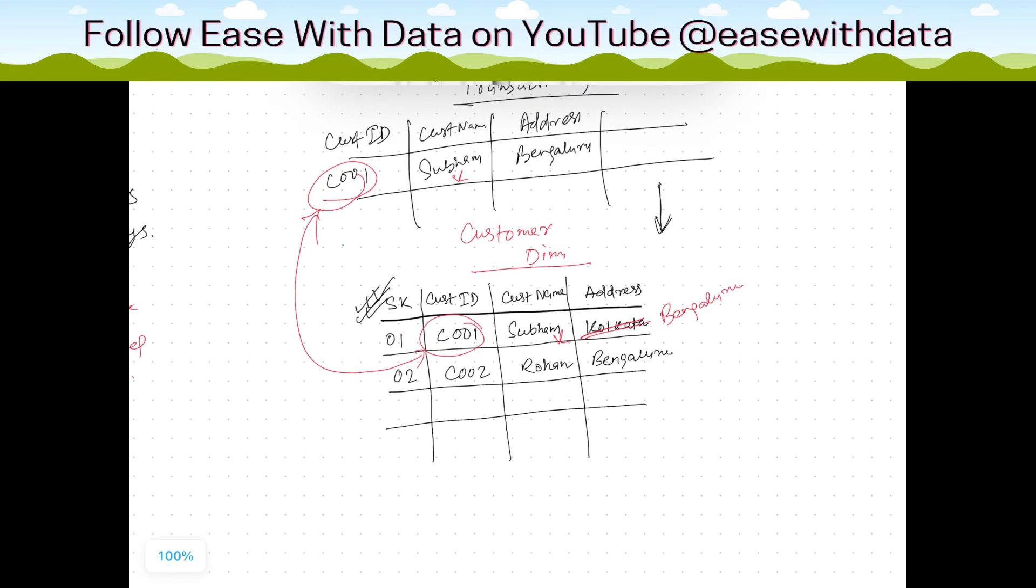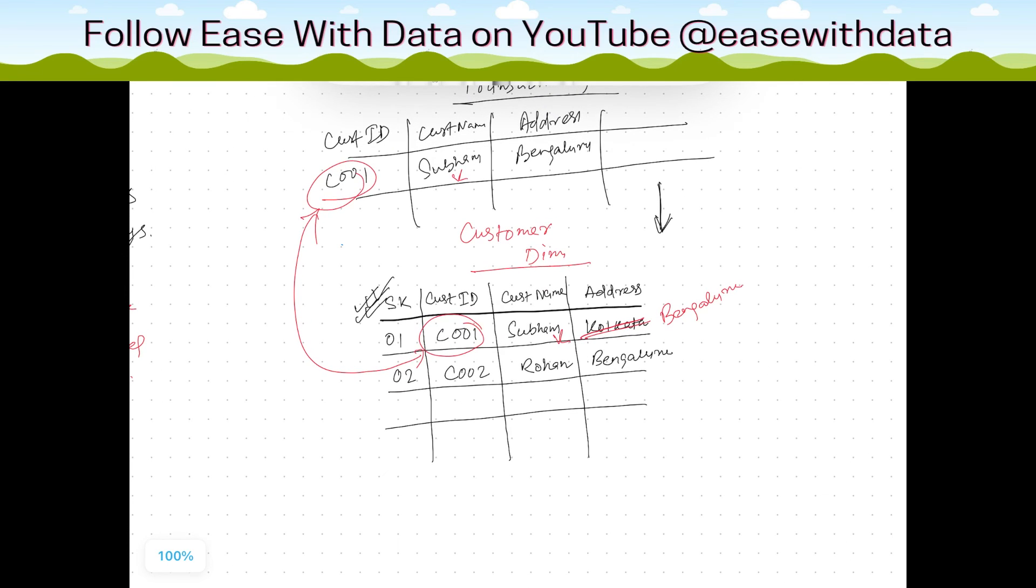In case of a new record, consider a new record is sent: C003, say Rakesh, and he is from Indore. So when the data loads, this will be changed to Bangalore, and there will be one more insert C003, that would be Rakesh, and this would be Indore.